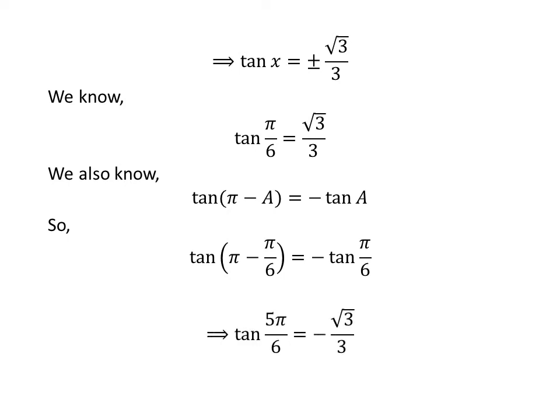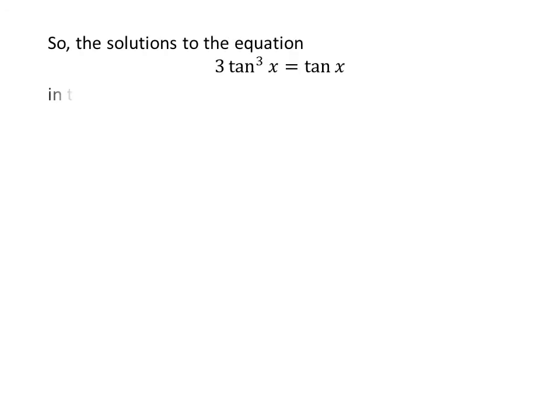Applying the above identity: pi minus pi upon 6 equals 5 times pi upon 6, and plugging in the value of tangent of pi upon 6 gives us tangent of 5 times pi upon 6 is equal to minus square root of 3 upon 3. So the solutions of the equation 3 times cube of tangent of x is equal to tangent of x in the interval 0 to pi are 0, pi upon 6, and 5 times pi upon 6.